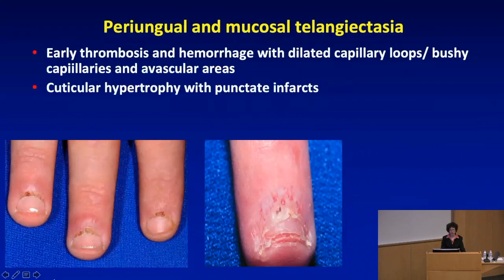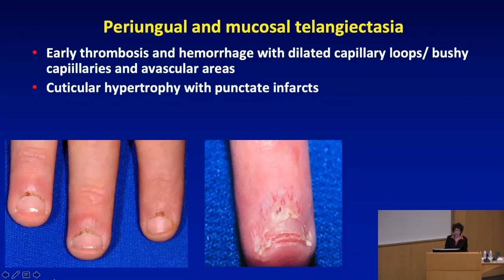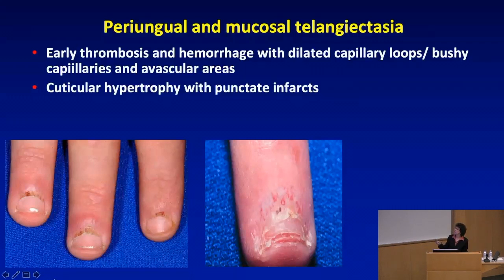Periungual telangiectasia, of course, is a cardinal feature, thought to represent early thrombotic phenomena with hemorrhage and dilated capillary loops — or bushy capillaries — and avascular areas between. Very often in this area we also see overgrowth of the cuticle, this cuticular hypertrophy, associated with punctate infarcts. Sometimes you can see these very easily without any magnification — very obvious cuticular hypertrophy, avascular areas, and bushy loops just by looking.